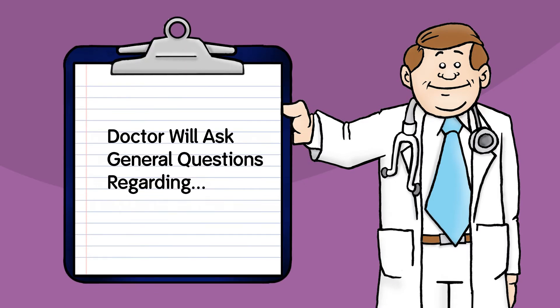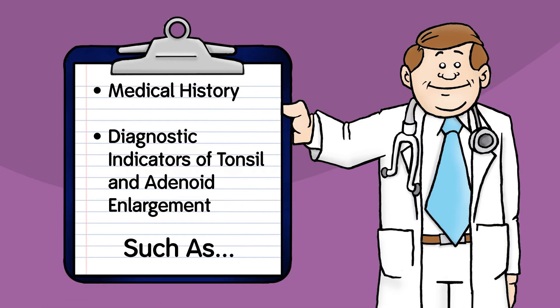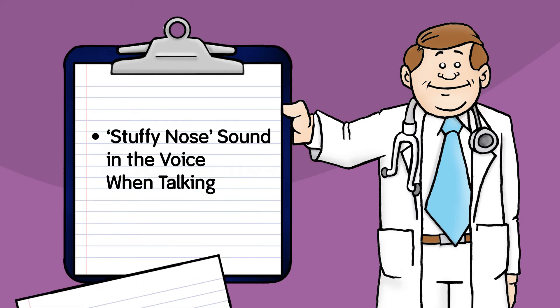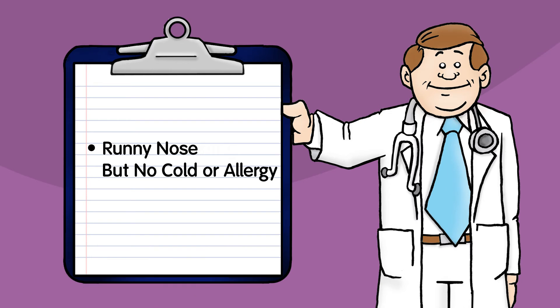The doctor will also ask general questions about medical history and diagnostic indicators of tonsil and adenoid enlargement such as majority of breathing taking place through the mouth as opposed to the nose, stuffy nose sound in the voice when talking, runny nose but no cold or allergy, loud breathing when awake, and persistent snoring when asleep.